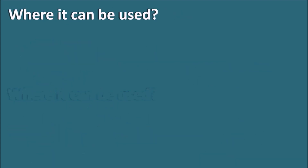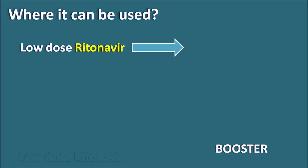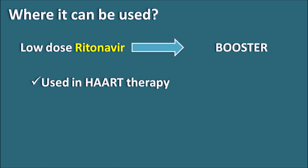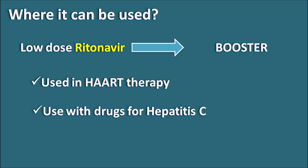Where can it be used? Low dose Ritonavir is used as a booster drug in HAART therapy, which is the highly active antiretroviral therapy, in which a combination of drugs are used in order to produce less resistance towards HIV therapy. In such situations, low dose Ritonavir can be combined with other protease inhibitors to increase their bioavailability and pharmacological efficacy. Ritonavir can also be used with other drugs such as protease inhibitors used for hepatitis C, but its safety in this combination is not yet fully established.